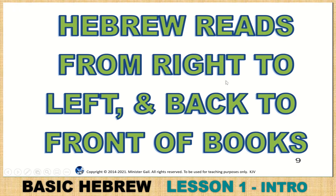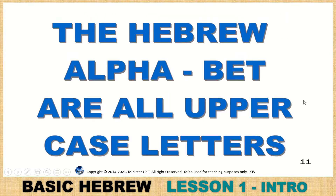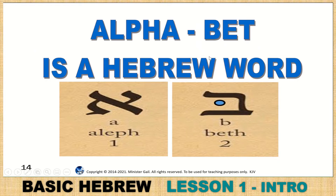Hebrew reads from right to left and back to front of books — when they have a book, they start on the right side and read from the back to the front. The Hebrew alphabet is all uppercase letters; there are no lowercase letters in the entire Hebrew alphabet, even today in modern Hebrew. That is a Greek and Roman Latin invention. The word 'alphabet' is a Hebrew word — Aleph, Bet. You have been using the word alphabet, which actually comes from the Hebrew: Aleph, Bet.